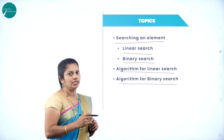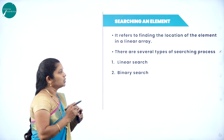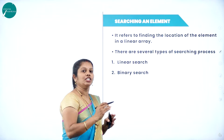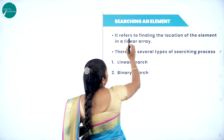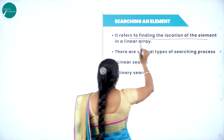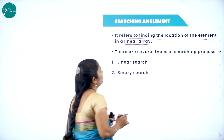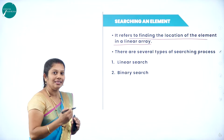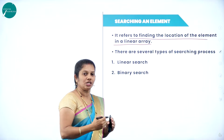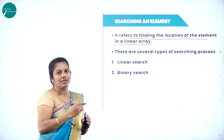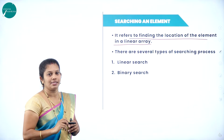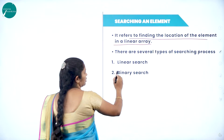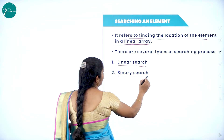Searching is a process of finding the location of an element. It refers to finding the location of an element in a linear array — in any array, under any conditions, how elements are found and on which location an element is present. There are two types of searching: linear search and binary search.